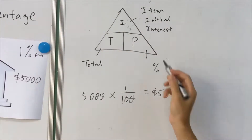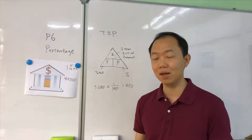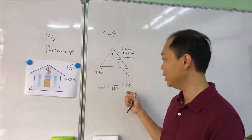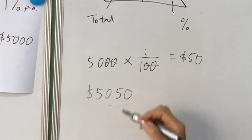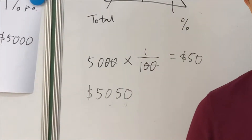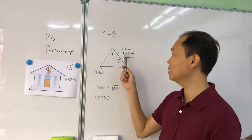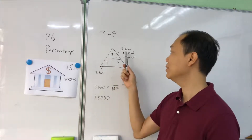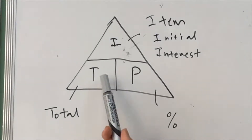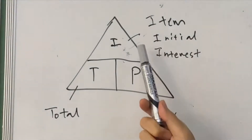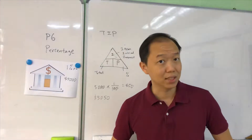Cancelling the zeros gives us $50 interest. The question asks how much money is in the bank one year later, so you add the $50 to $5,000 to get $5,050. The TIP triangle can be used to find Item/Interest, or given the item and percentage you can find the Total, or divide item by total times 100 to find the Percentage.